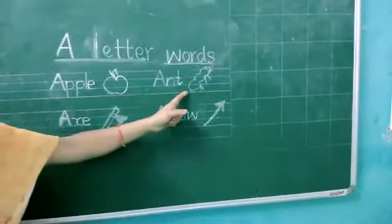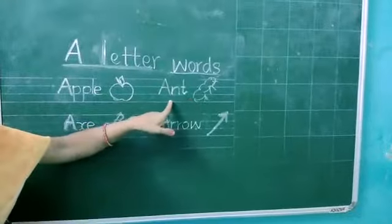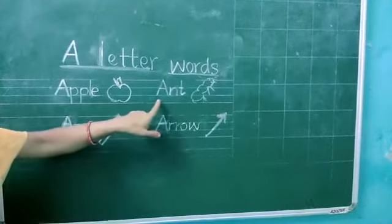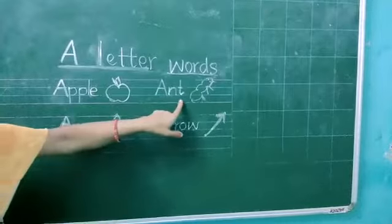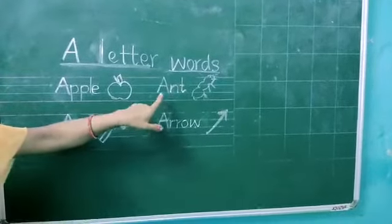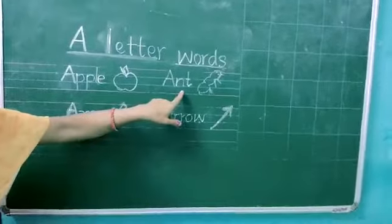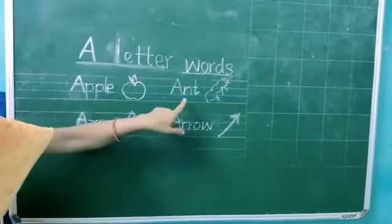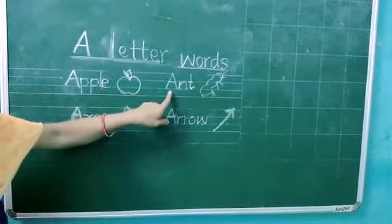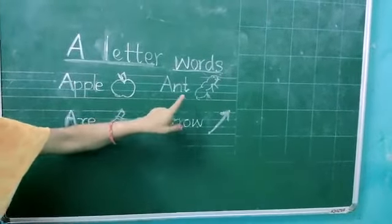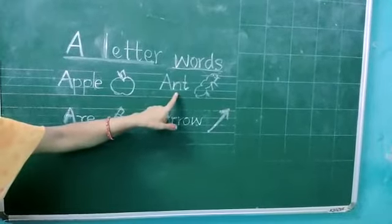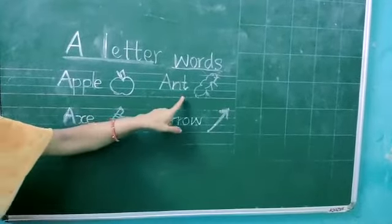Let's see this word. Come on, what is this word? Ant. All of you say — what is this word? Ant. Ant starts with letter A. What's the spelling of ant? A, N, T. Ant. Once again: A, N, T. Ant.